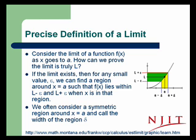Consider the limit of a function f(x) as x goes to a, and suppose that limit is L. How can we prove that the limit is truly L? If the limit exists, then for any small value epsilon, we can find a region around x equals a such that f(x) lies within epsilon of the limit L.